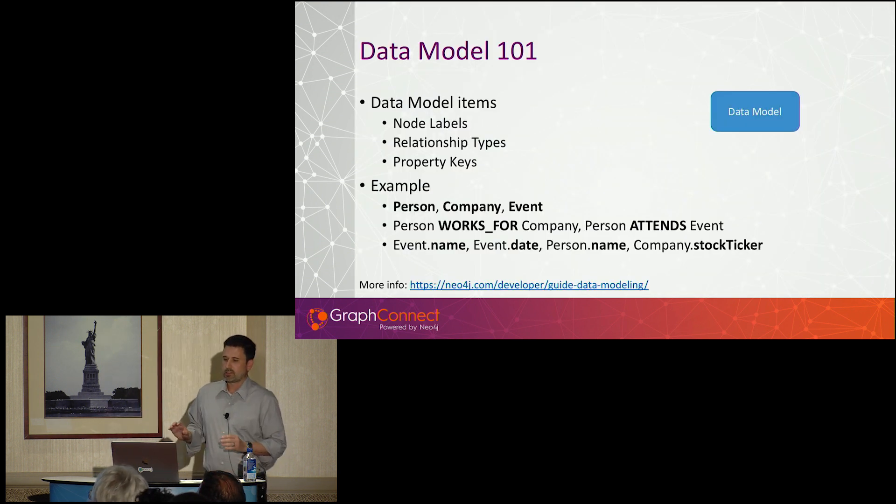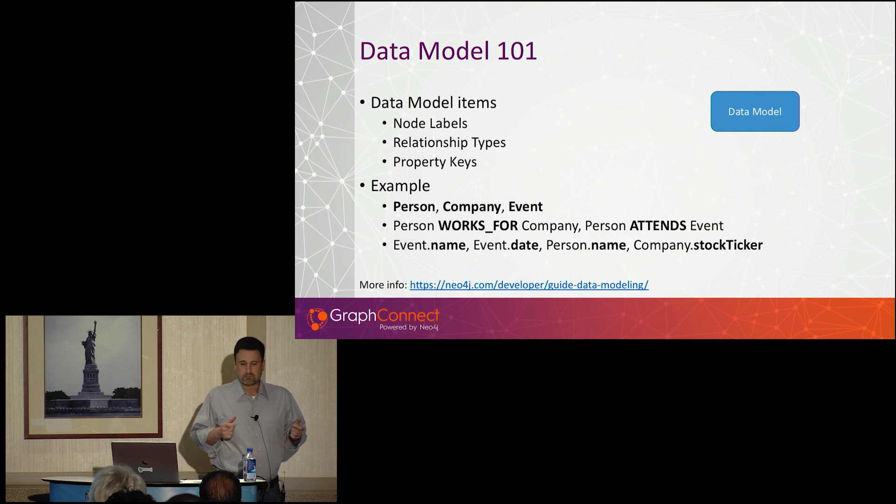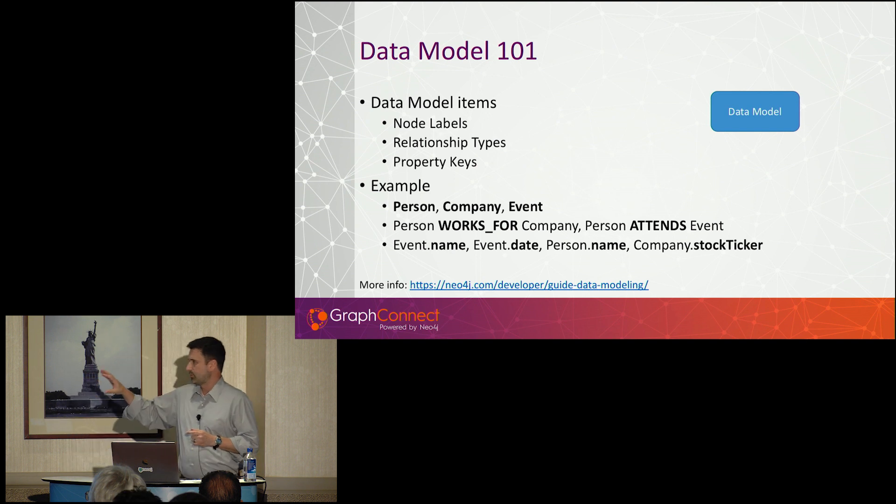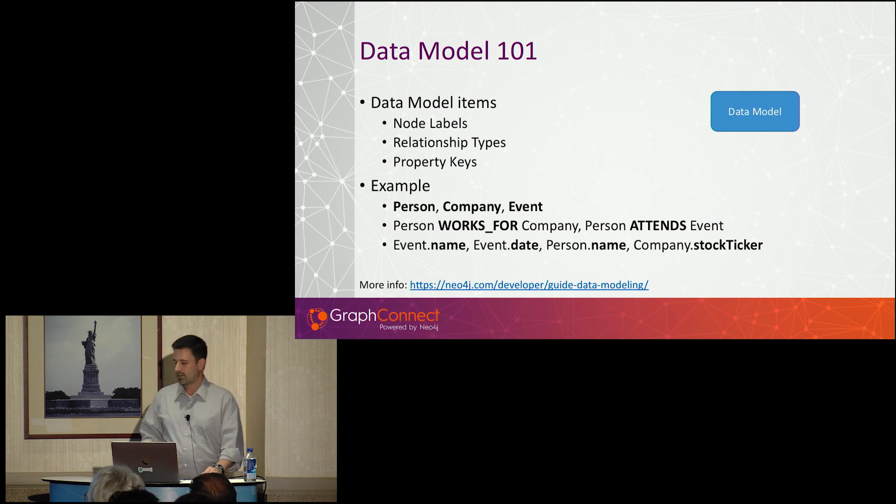One quick note before I get into the demo. Just a quick note on data modeling. Neo4j is what they call a label property graph. So we have node labels, relationship types, and property keys. And this is just a simple example. We have person, company, event. Person works for company, person attends event. If you've used Neo for a while, this is old hat to you. If you're new to Neo, these are the important concepts to understand.